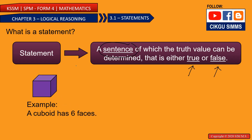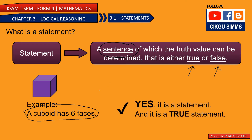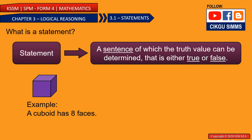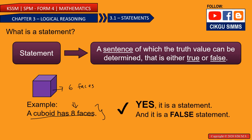For example, 'A cuboid has six faces.' This is a statement, and it is a true statement. Another example: 'A cuboid has eight faces.' This one is wrong — a cuboid has only six faces — but this is also considered a statement. It is a statement, although it is false.